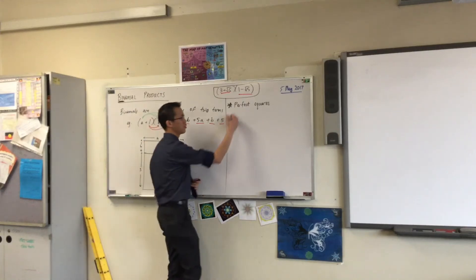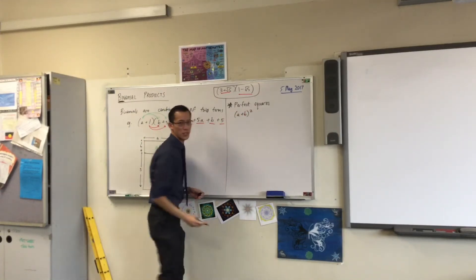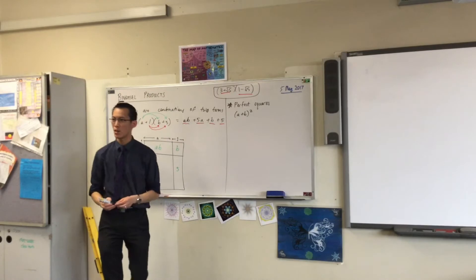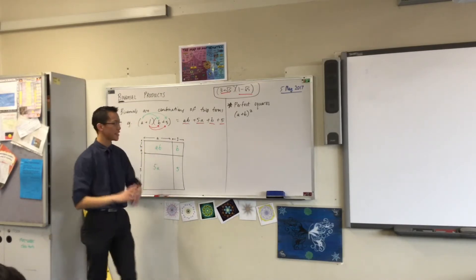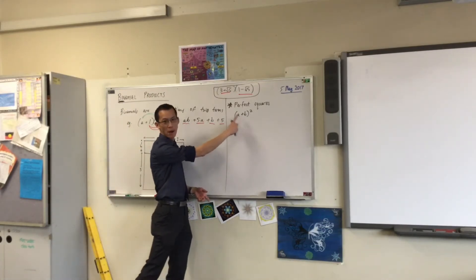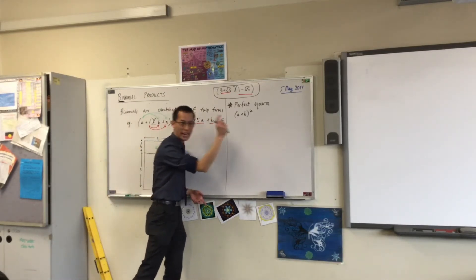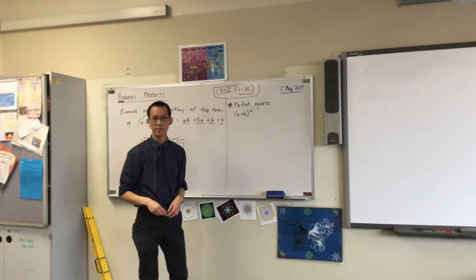Perfect squares — there are two that we're interested in. The first one is a plus b, all squared. It's a perfect square. It's a binomial multiplied by itself, hence a plus b all squared.